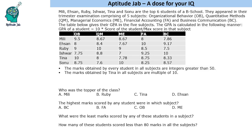Their marks are given in the form of GPA. GPA is calculated as: GPA = 10 × (student's score / maximum score in that subject). For example, if the maximum marks in a subject are 80 and someone scores 72, their GPA is (72/80) × 10 = 9. Additionally, marks obtained by every student in all subjects are integers greater than 50, and marks obtained by T9 in all subjects are multiples of 10.